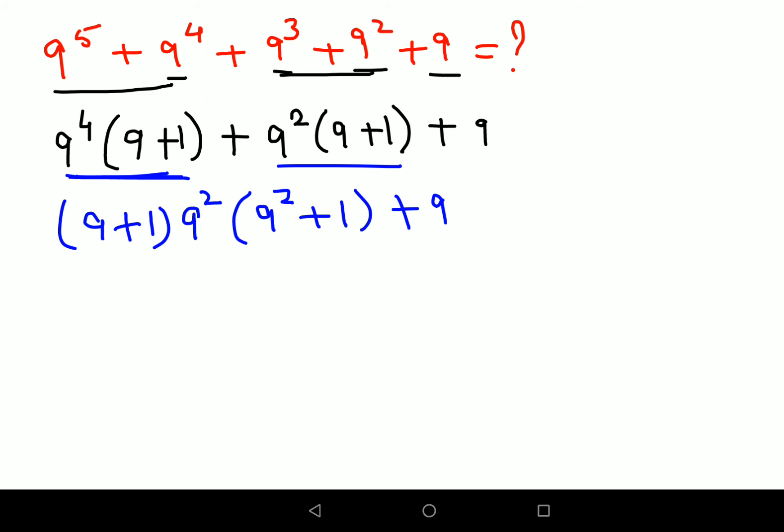Let's solve this. So 9 plus 1 gets you 10 into 9 square which is 81 into 9 square plus 1 gets you 82 plus 9.